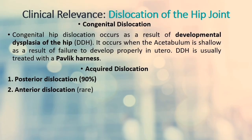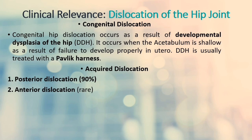Clinical relevance: dislocation of the hip joint. Congenital hip dislocation occurs as a result of developmental dysplasia of the hip (DDH), when the acetabulum is shallow due to failure to develop properly in utero. Common features include limited abduction, limb length discrepancy, and asymmetrical gluteal or thigh skin folds. DDH is usually treated with a Pavlik harness, which holds the femoral head in the acetabular fossa and promotes normal development. Surgery is indicated in cases that do not respond to harness treatment. Acquired dislocations are relatively uncommon, owing to the strength and stability of the joint, and usually occur as a result of trauma.